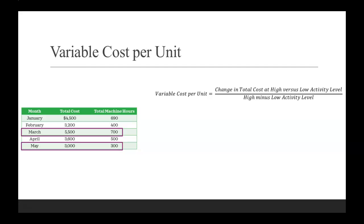So March will be our high and May will be our low. Now if we take a look at the equation, we see that we take our change in total cost at high versus low activity level divided by our high minus low activity level.